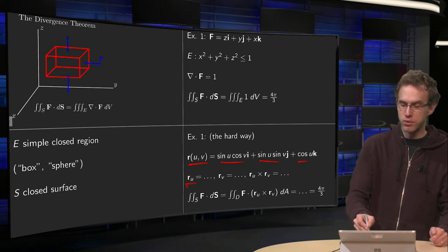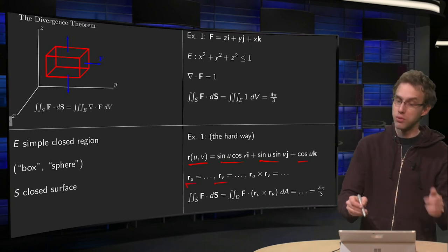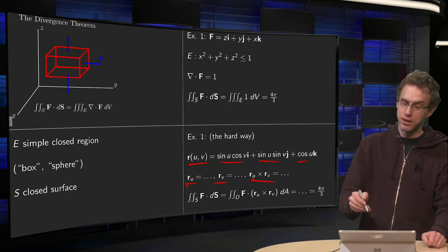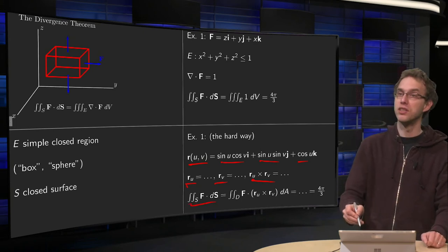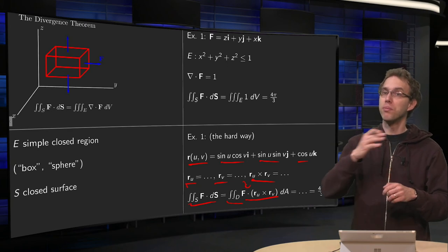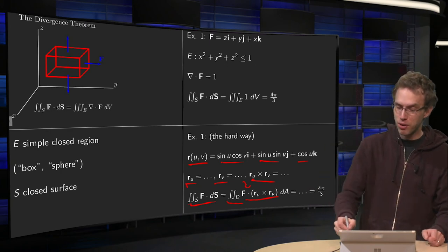Then you need to compute RU, you need to compute RV, you need to compute the cross product RU cross RV, and then you can convert your flux integral into an integral over region D with this inner product. Put the parameterization in capital F, compute, compute, compute, and lo and behold...